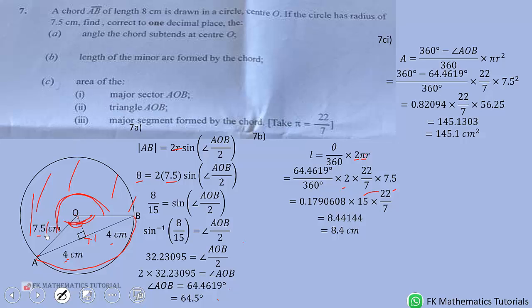Now let's look at the area of triangle AOB. Triangle AOB is given by half base times height. So the base is 8 centimeters, so half times 8 times height. The height of this triangle we can use Pythagoras theorem to find that.